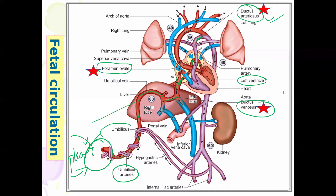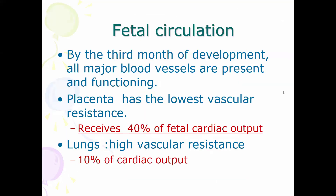The main aim of these shunts is to redirect blood away from areas less needed in the fetus — the liver is not metabolically active and the lungs are solid and do not perform gas exchange. All highly oxygenated blood is shunted towards systemic circulation, mainly focusing on the brain. By the end of the third month of development, all major vessels are present and functioning. The placenta has the lowest vascular resistance and receives 40% of fetal cardiac output. The lungs have high vascular resistance and contain only 10% of cardiac output.